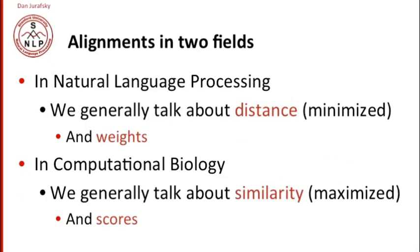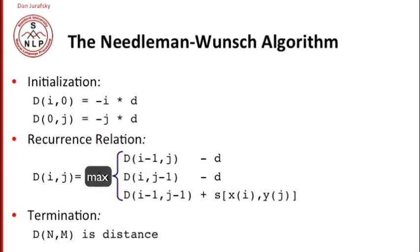In general, in natural language processing, we talk about distance. So string edit distance, minimum edit distance. We're minimizing distance and we're computing weights for things. In computational biology, we're talking about similarity. We're maximizing similarity, asking how similar two things are. And we generally talk about scores rather than weights.